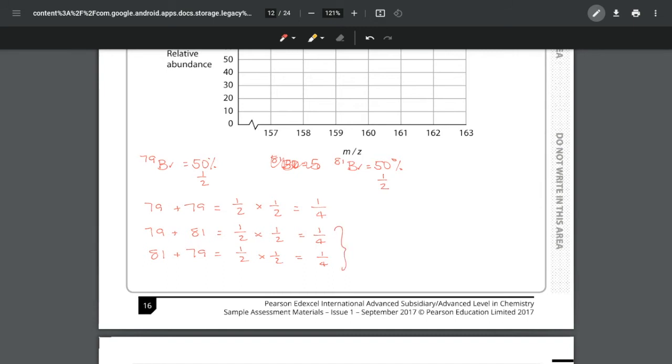If you notice, these two are going to have the same mass. The 79 and 79 is going to be 158, whereas the 79 and 81 will give you a peak at 160. Or I could have two 81s, but the chances do not change, which is one in four, and that gives you a peak at 162.